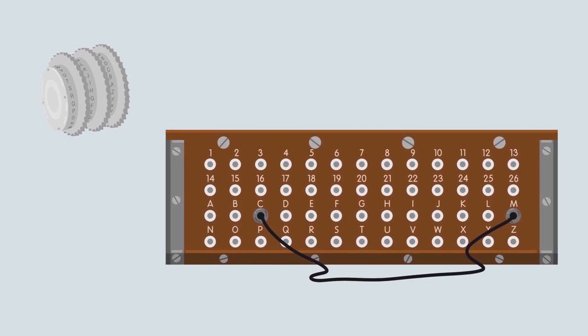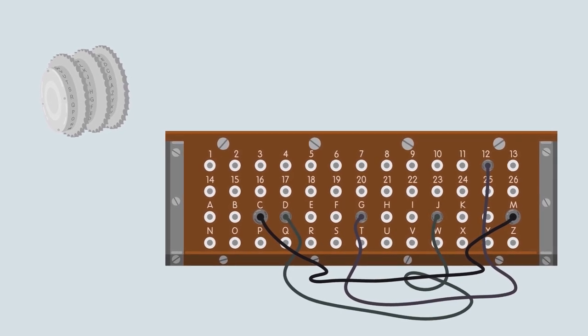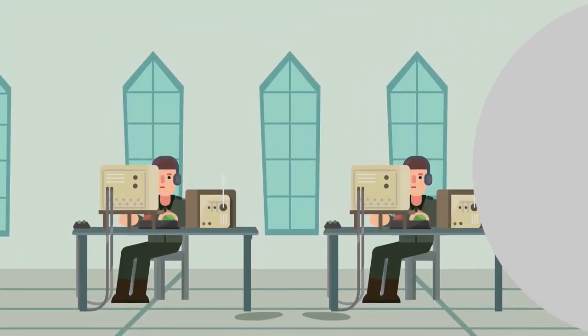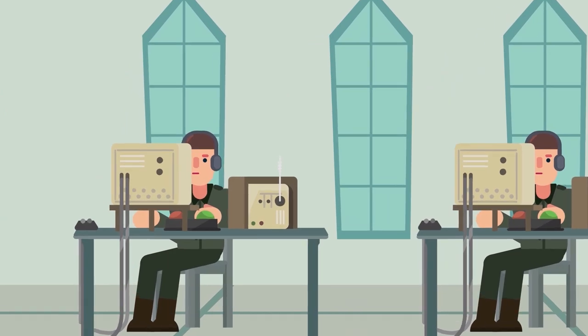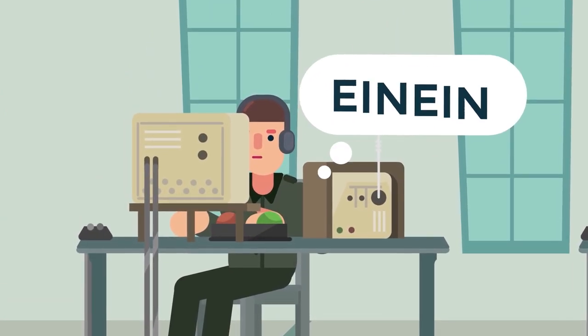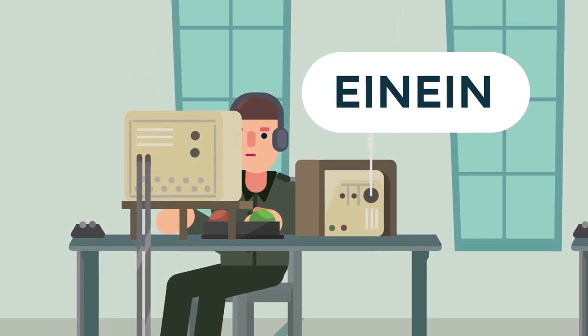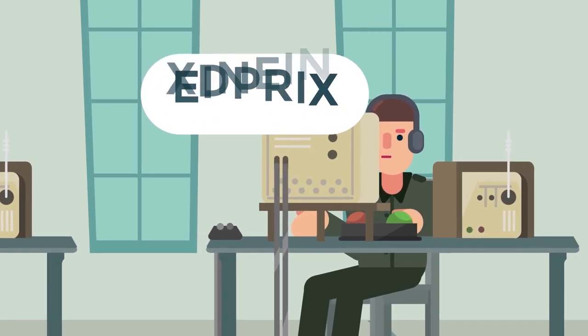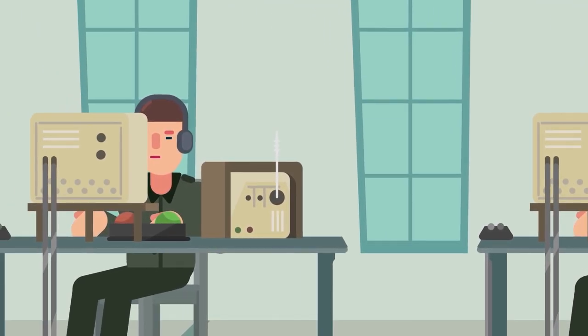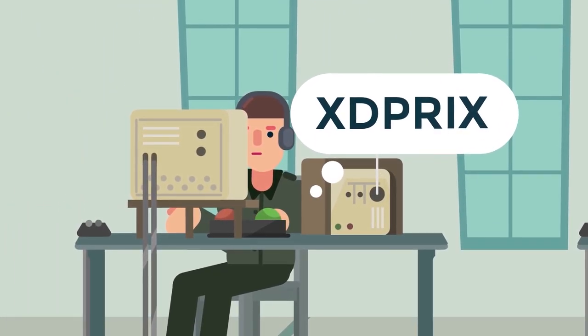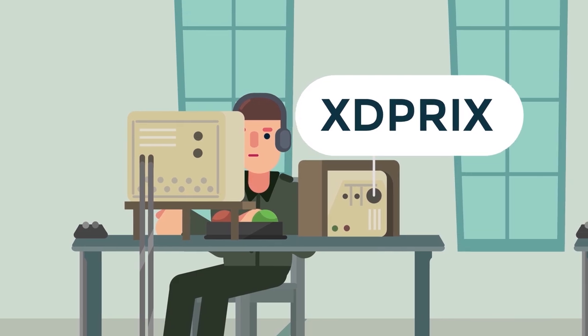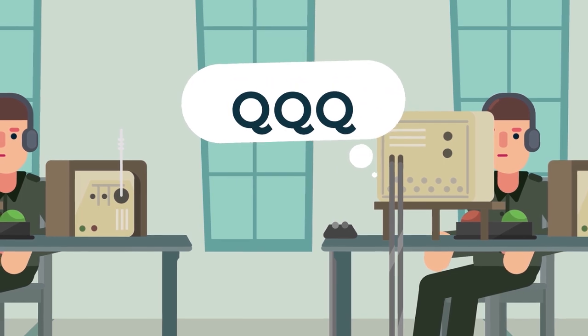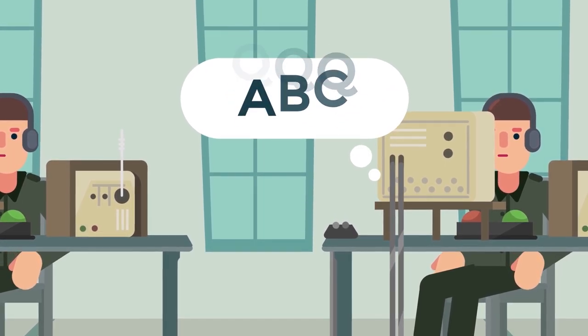But even with the hacked code, it was far from victory. The Nazis foresaw this possibility, so they changed the settings of the rotors and the patch panel every day. To transmit an encrypted message, the operator first sent a key consisting of encrypted characters visible only in the initial position of the rotors. To avoid the error, the key message was sent twice. The Poles noticed a weak link in this procedure. Key messages throughout the day were the same throughout the network, and many operators chose the most obvious options, such as QQQ or ABC.